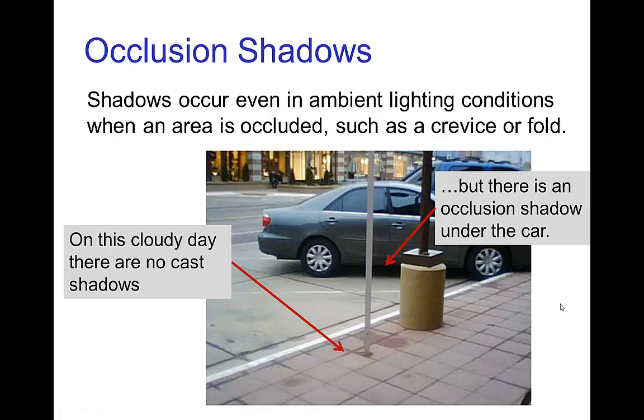So occlusion is when we have say a shadow under a car or a shadow where two surfaces are close to each other, basically situations where even though we have illumination coming from basically all directions, just due to the geometry, not much light gets into a crevice or a fold.